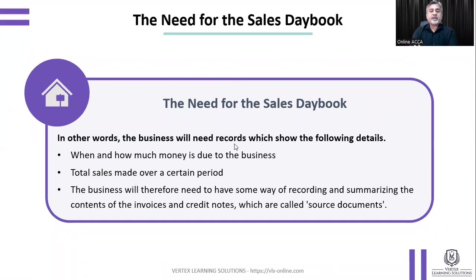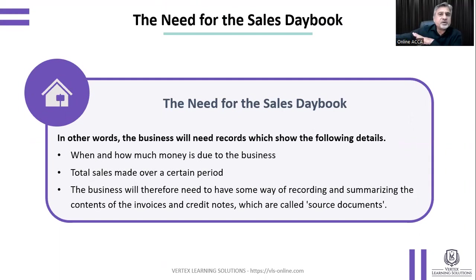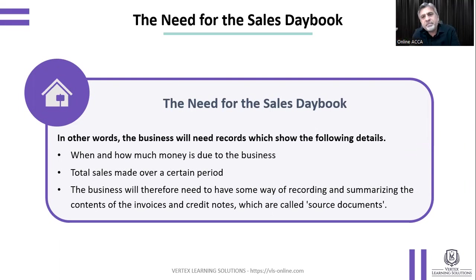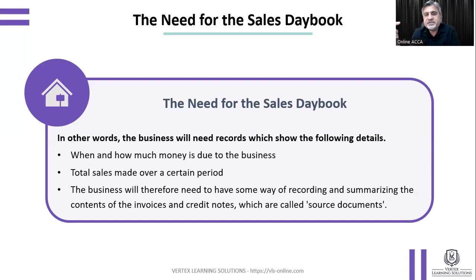In other words, the business needs records showing when and how much money is due. This is only possible if you maintain your sales daybook. Cash sales are not an issue since you've already received the cash. But for credit sales, you need to know how many customers will pay in September, October, or December, because different customers get different credit terms — some get 15 days, some 30 days, some 60 or even 90 days.